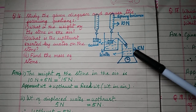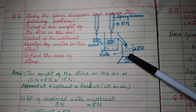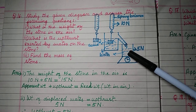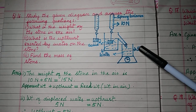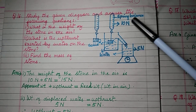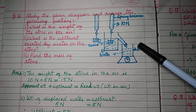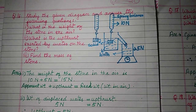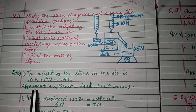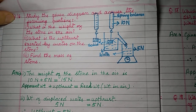Upthrust equals the weight of liquid displaced. Adding the apparent weight and upthrust gives the real weight: 10 newton plus 5 newton equals 15 newton. So apparent weight plus upthrust equals real weight according to the formula.